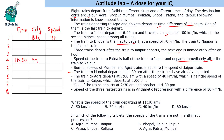Three trains depart after the train to Raipur departs, so Raipur must be the fifth train with three trains after it. The next train departs immediately after one hour, though we do not yet know its timing.